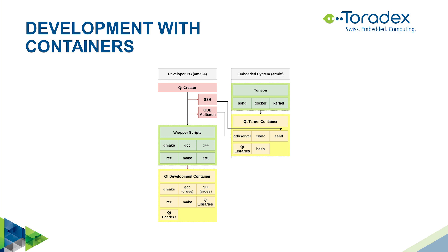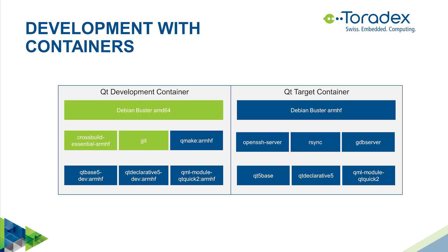The problem with Qt Creator today is that it doesn't allow running containers directly, so you need to write wrapper scripts which abstract the underlying commands. So if you run Qmake, it will not directly call Qmake but instead will spawn a container which includes Qmake, and then call Qmake inside the container. On the target, you also run a container which includes GDB Server, SSH, and all the Qt libraries you link against.